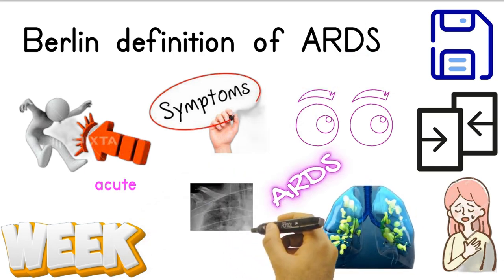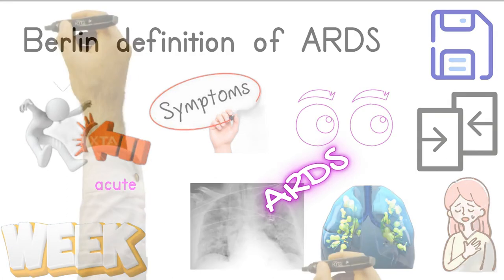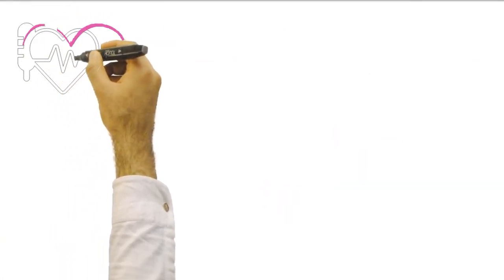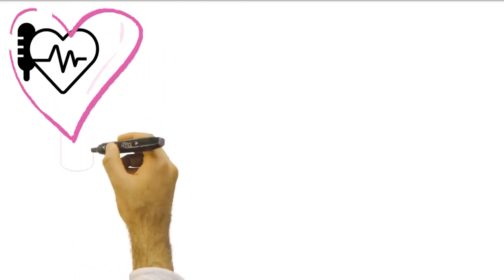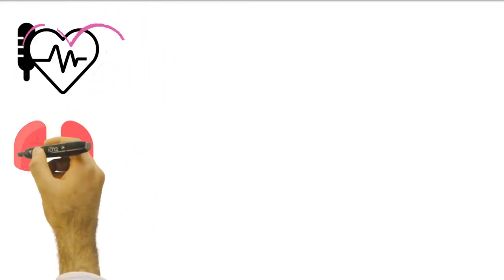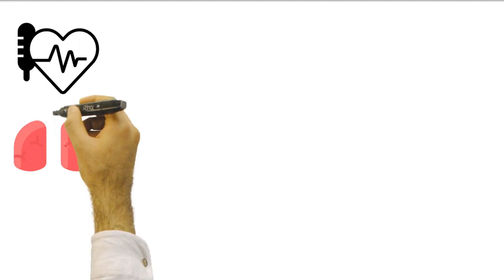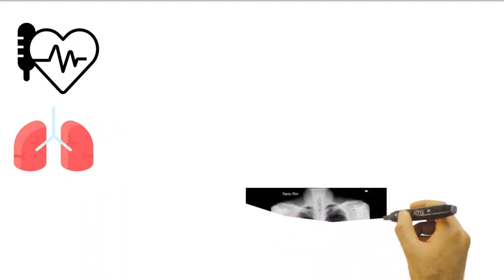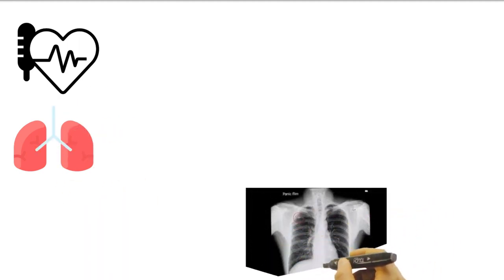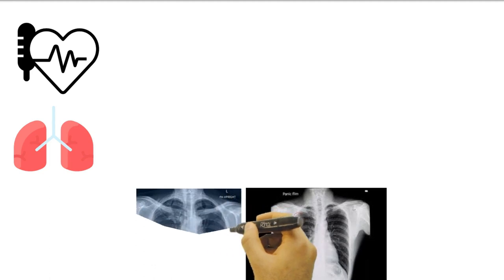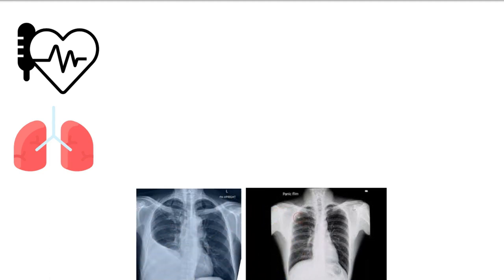And those should not be due to heart cause, not due to heart or other lung conditions such as a nodule. There should not be any nodule or an effusion, or even a consolidation. So those bilateral pulmonary infiltrates are not due to nodule, not due to effusion, not due to consolidation.